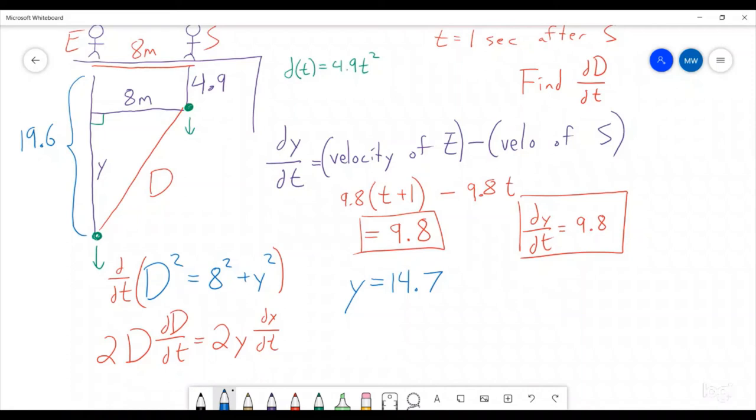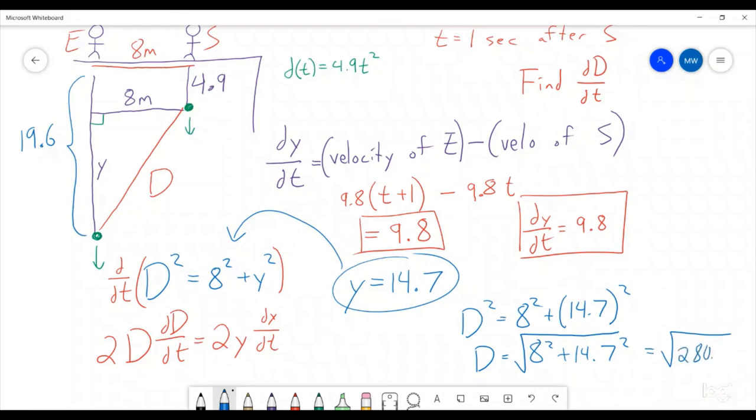So we've solved for y, we have dy/dt, we're trying to find dD/dt, we just need to know what's d. Well, we can take this value for y and plug it in here. So that means that D² = 8² + 14.7². So d is going to be the square root of all of that. So it's the square root of 8² + 14.7². Let me quickly pull out a calculator and calculate what that is, because I'm not wanting to do that by hand. So that's the square root of 280.09. And raise that to the 0.5. So d is about 16.74.